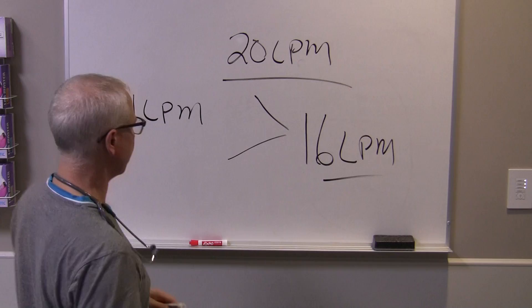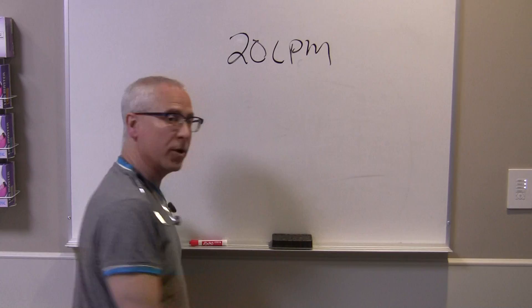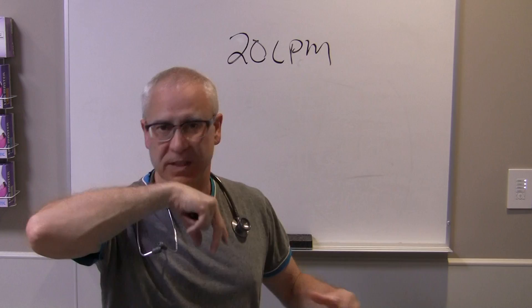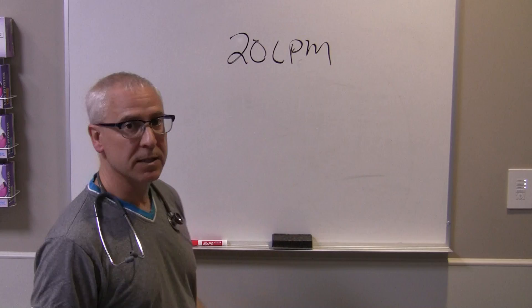High flow systems, on the other hand — when you're setting one up for your patient, what you're doing is exceeding the inspiratory flow rate that the patient is generating. If you're setting a high flow system up, like a cold neb, a blender, an Aervo, a Vapotherm, or some other high flow system, always set the flow rate higher than the inspiratory flow rate of the patient.